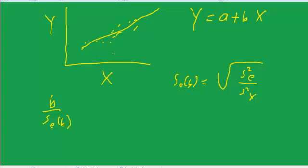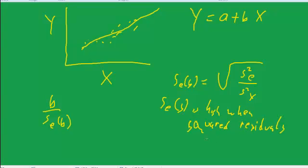If we have a relatively narrow variation of x and a huge variation in the error terms, in the residuals, then we get a very high standard error of b. The standard error of b is high when the squared residuals are high relative to the variation in our explanatory variable.